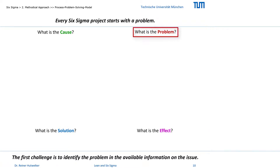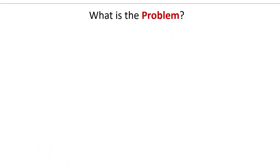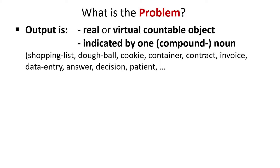Six Sigma projects start with a problem, and problems are attached to outputs. Outputs are real or virtual objects. They can always be indicated by just a noun or a compound noun, like shopping list, ingredient, dough sheet and cookie. Outputs are countable, as they result from a repetitive process.